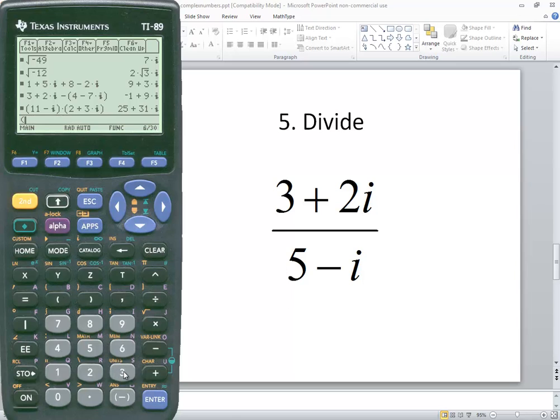So I do a beginning parentheses 3 plus 2 and then I do my second catalog for the i, closing parentheses, divided by beginning parentheses 5 minus 2nd catalog for the i, closing parentheses and then press enter.